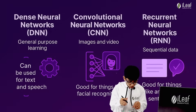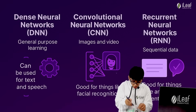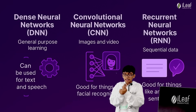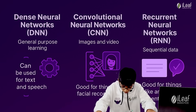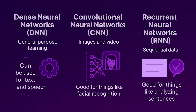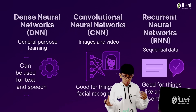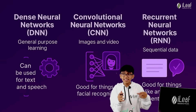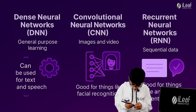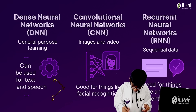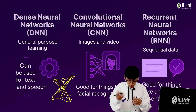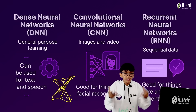First, DNN — Dense Neural Networks. These can be used for text and speech. They're called 'dense' because there are a lot more lines or connections between nodes. Think of it this way: more lines between fewer dots means more density, which is DNN. More dots going deeper means it's a deeper network.